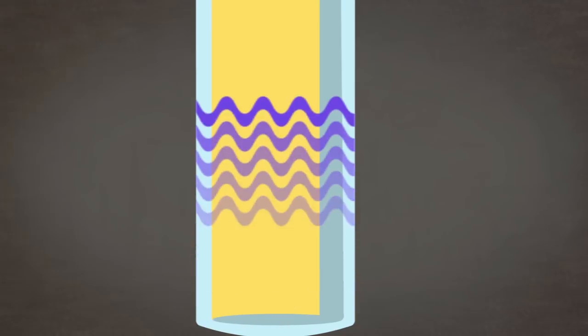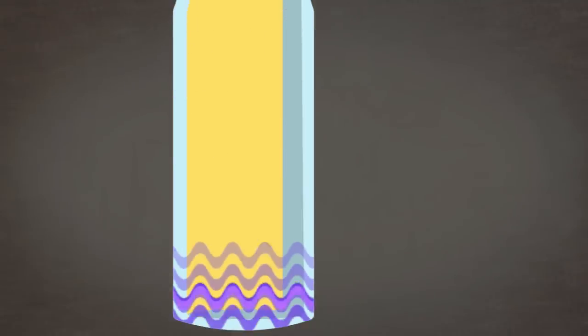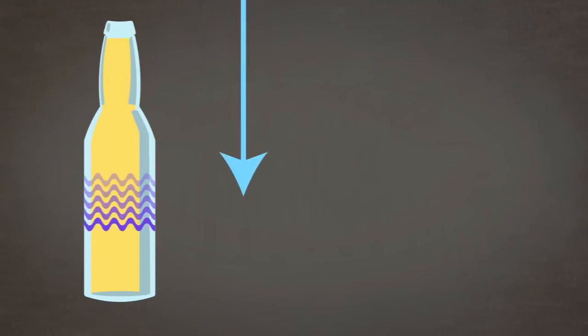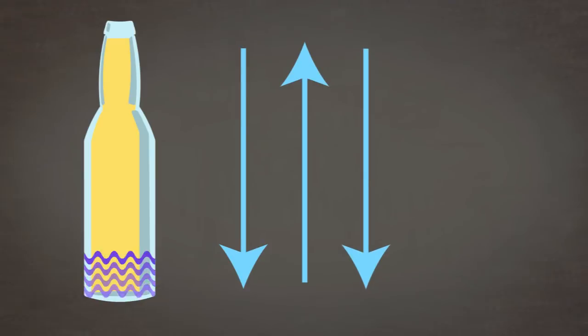When you bonk a beer bottle on top, the hit creates pressure waves that travel down through the liquid. These waves bounce off the bottom of the bottle, head back up to the top, and then bounce back down again.